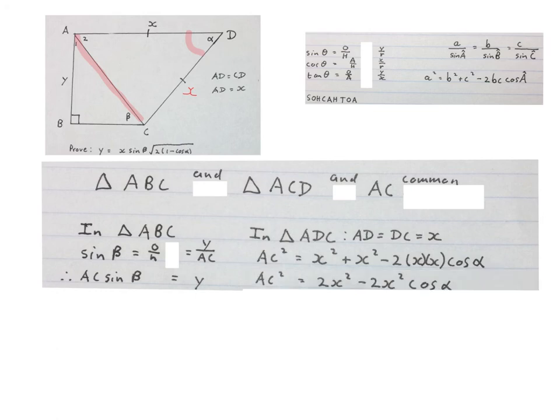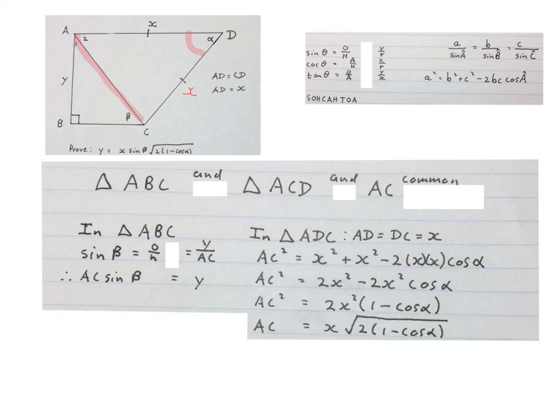If you simplify this you'll get AC square equals to 2X square minus 2X square cos alpha. Then you can factorize out 2X square from those two terms. If you square root both sides you get AC alone. So AC equals to X square root of 2 bracket 1 minus cos alpha bracket. Now we can substitute the value of AC from here back into that equation.